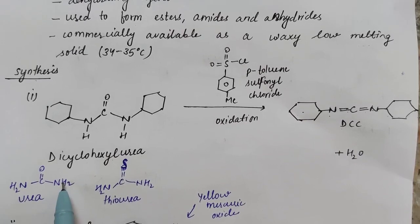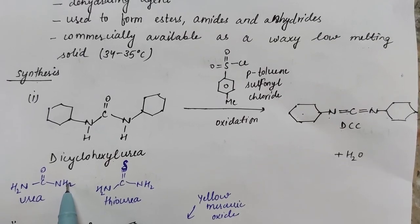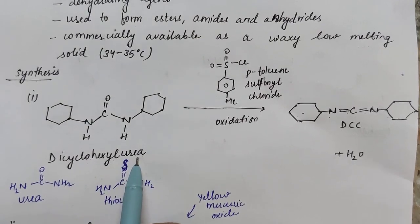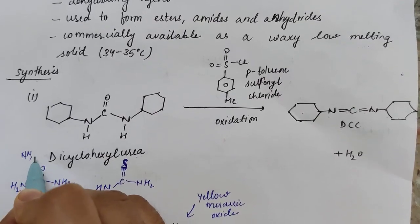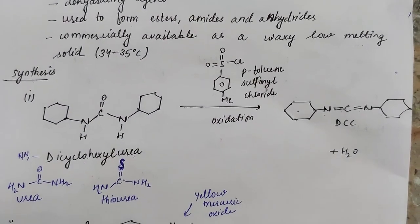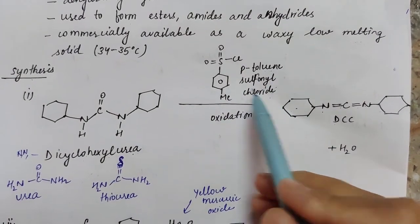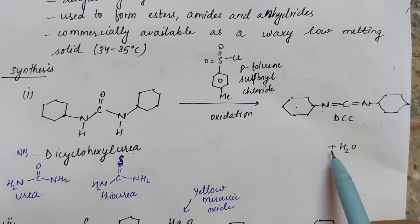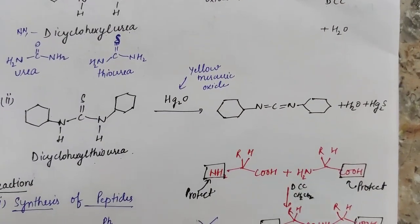In the first synthesis, dicyclohexyl urea is derived from urea by replacing both hydrogen atoms on each nitrogen with cyclohexyl groups, giving N,N-dicyclohexyl urea. When this is treated with para-toluenesulfonyl chloride, it undergoes oxidation to give DCC, and a water molecule is eliminated.